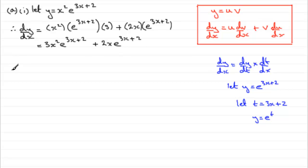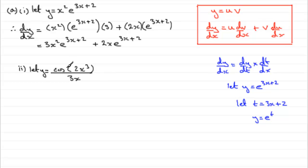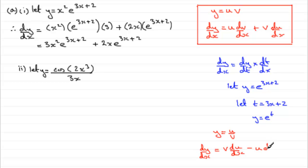Now in part 2, we're asked to differentiate another function — and that function is cos of 2x cubed, over 3x. I would again say let y equal that. What we have here is the quotient rule, because we've got a function of x on the top and a function of x on the bottom. Quick reminder of the quotient rule: if you've got y equals u over v, where u and v are functions of x, then dy/dx equals the bottom of the fraction, v, times the differential of the top, du/dx, minus the top times the differential of the bottom, dv/dx, all over v squared.